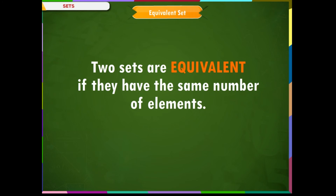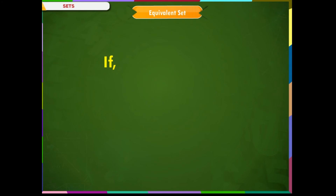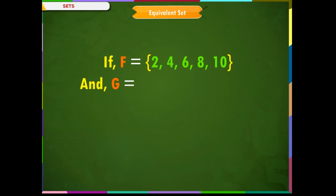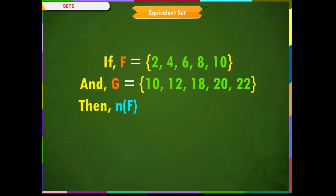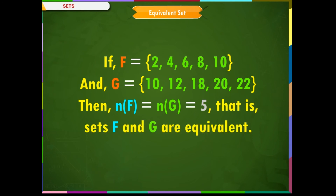Equivalent set. Two sets are equivalent if they have the same number of elements. For example, if F = {2, 4, 6, 8, 10} within curly brackets and G = {10, 12, 18, 20, 22} within curly brackets, then n(F) = n(G) = 5. That is, set F and G are equivalent.